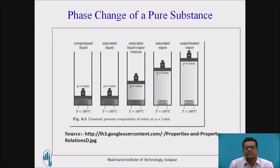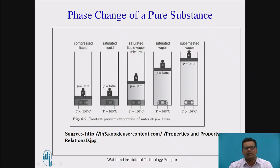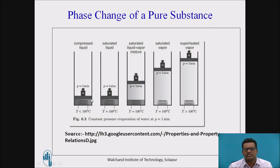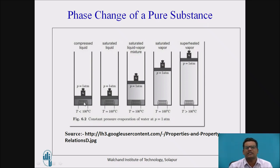Now we will discuss the phase change process of pure substance. We are going to consider the example of generation of steam at a constant pressure of one bar, that is normal atmospheric pressure. Consider the first diagram in which water is at less than 100 degrees Celsius, and the pressure exerted by the piston is one atmospheric pressure. Since the temperature of this water is less than the saturation temperature, it is obviously in the liquid state.